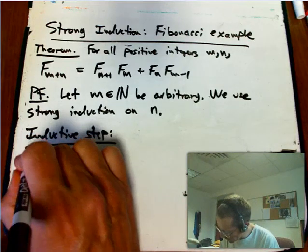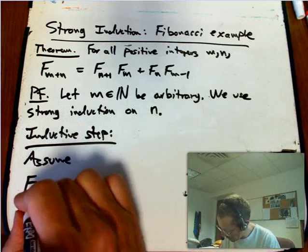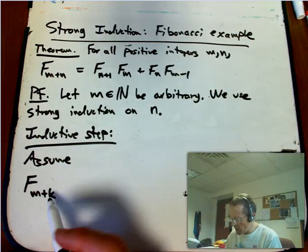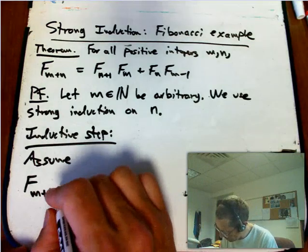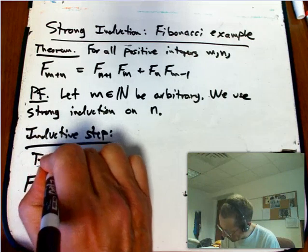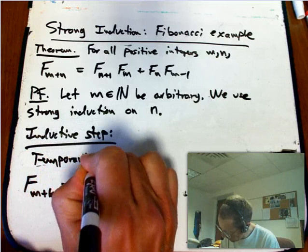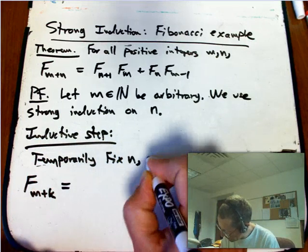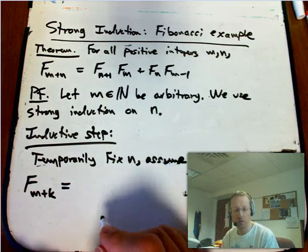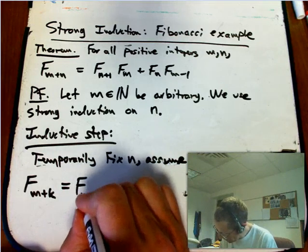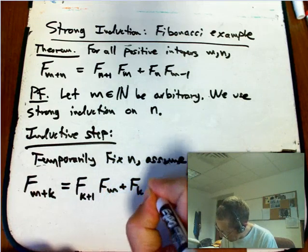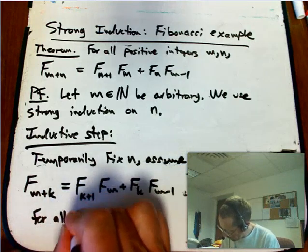The inductive step, we're going to assume that f sub m plus k. Now we're going to bring in the k in a little bit of a different role we had with the non-strong induction. k is just a stand-in for any number less than n. So we could say, temporarily fix an n and assume that. And I'm just putting in, changing the n to a k.